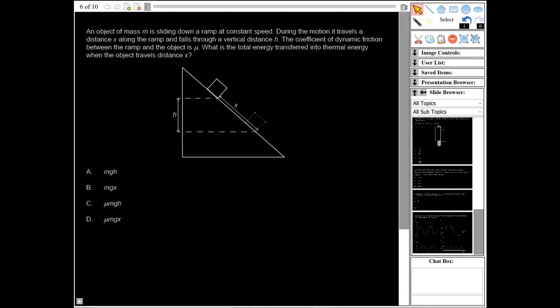All right, object of mass m is sliding down a ramp at constant speed. During the motion it travels a distance x along the ramp and falls to a vertical distance h. The coefficient of dynamic friction between the ramp and the object is mu. What's the total energy transferred into thermal energy when the object travels a distance x?